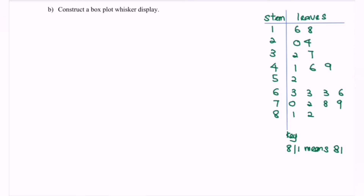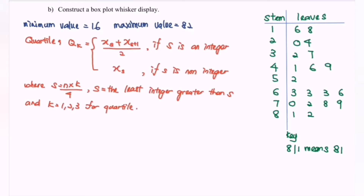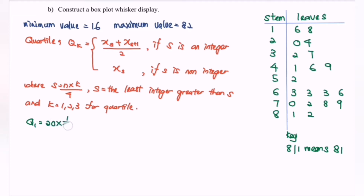Referring to the stem plot, we have the minimum value equal to 16, and the maximum value equal to 82. Next is to find the first, second, and third quartiles. By referring to the formula for the quartile, Q1 equals 20 multiplied by 1/4, so Q1 is equal to the 5th term.